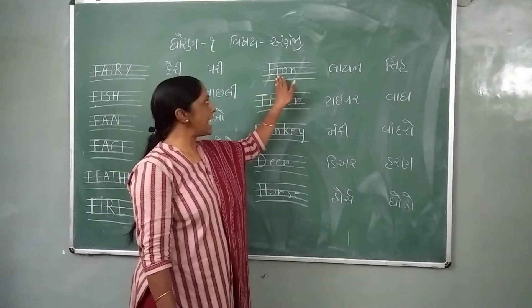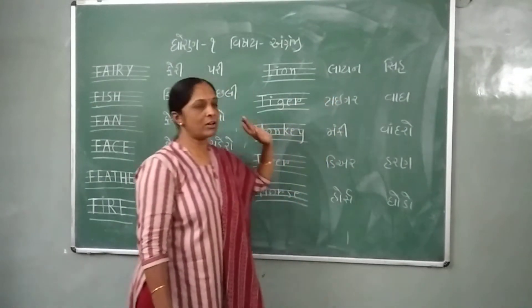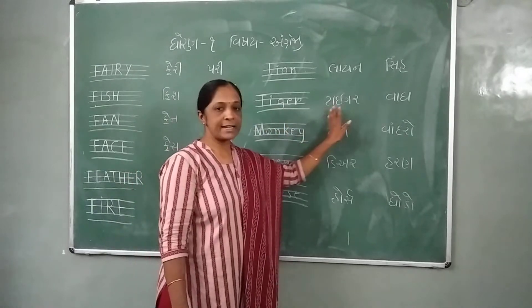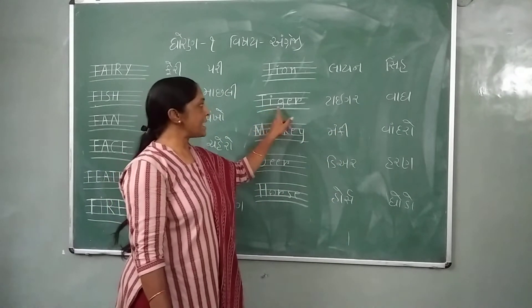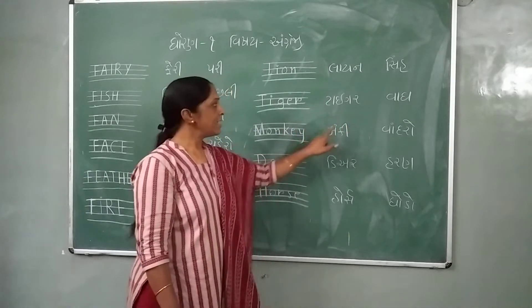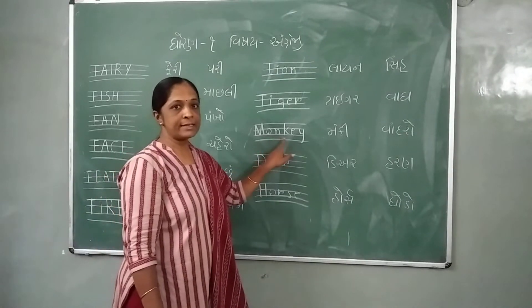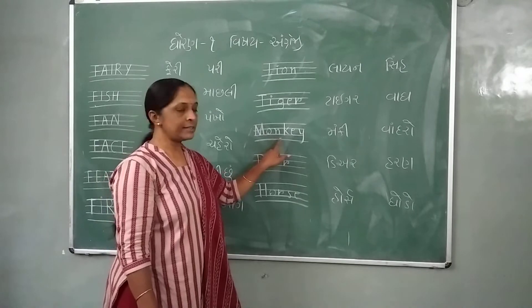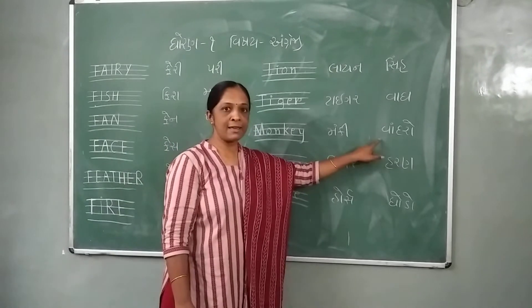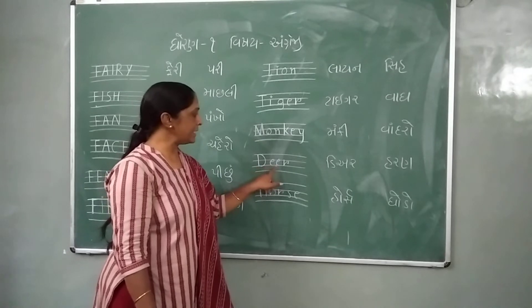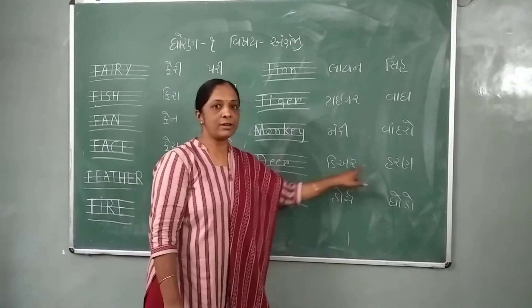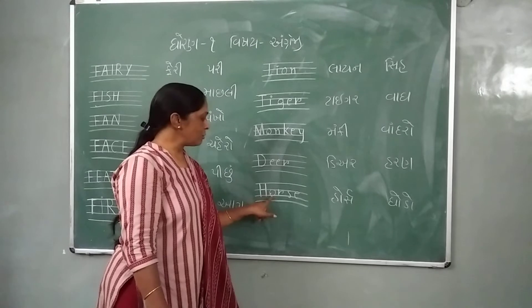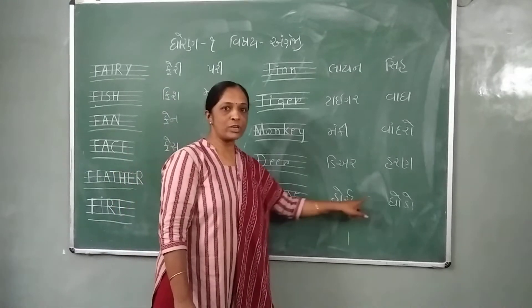The next one is lion. Lion is a tiger. Tiger is a tiger. L-O-N-K-E-Y is a tiger. Monkey is a tiger. D-E-E-R is a tiger. H-O-R-S-E is a tiger.